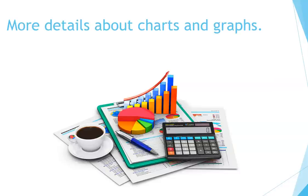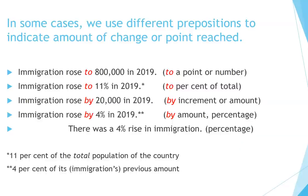More details about charts and graphs. In some cases, we use different prepositions to indicate amount of change or point reached. For example: 'Immigration rose to 800,000 in 2019' — to a point or number. 'Immigration rose to 11% in 2019' — to a percent of total. 'Immigration rose by 20,000 in 2019' — by increment or amount. 'Immigration rose by 4% in 2019' — by amount or percentage. 'There was a 4% rise in immigration.' 11% of the total population, or 4% of immigration's previous amount.